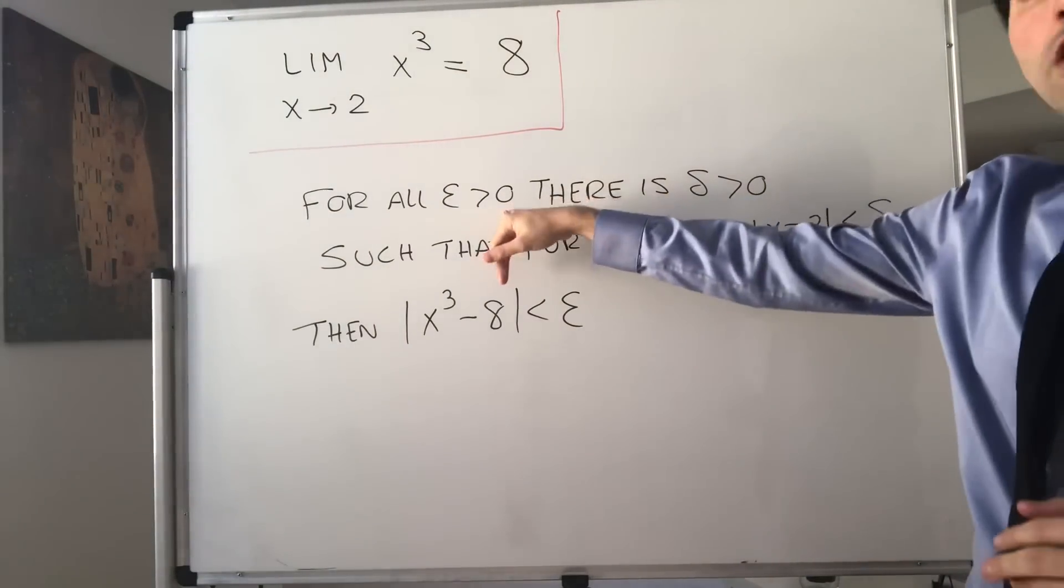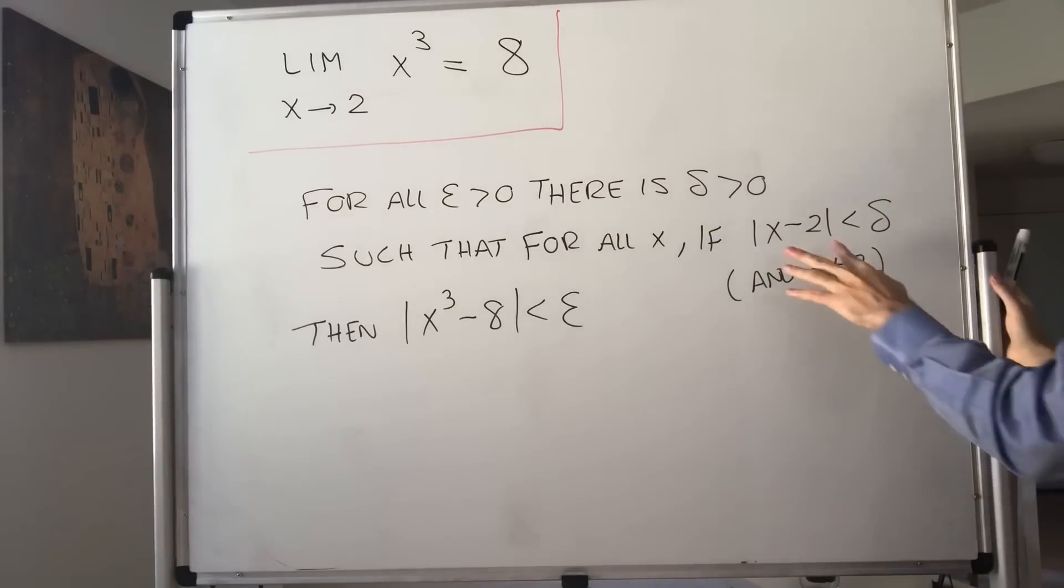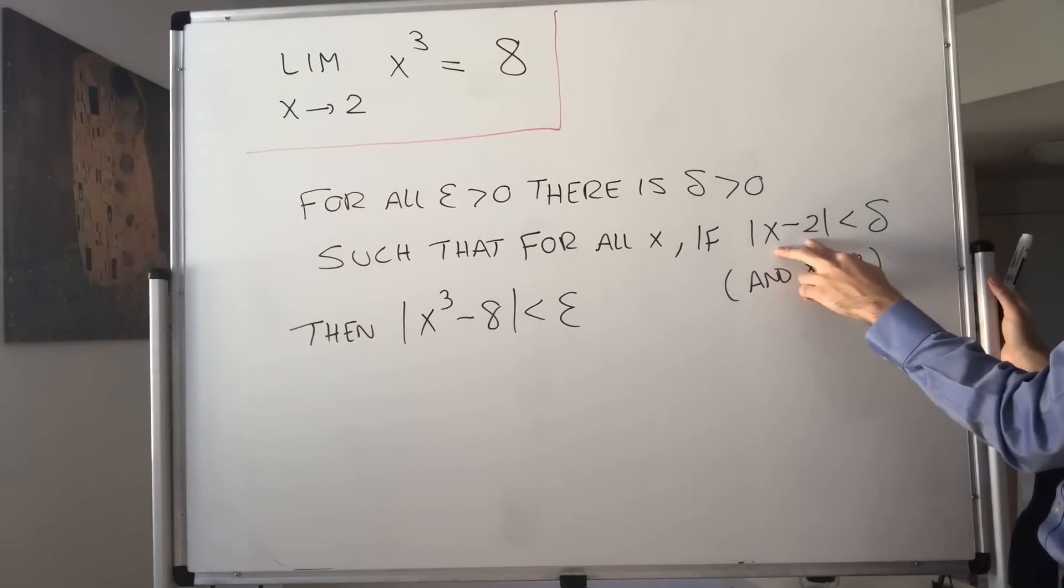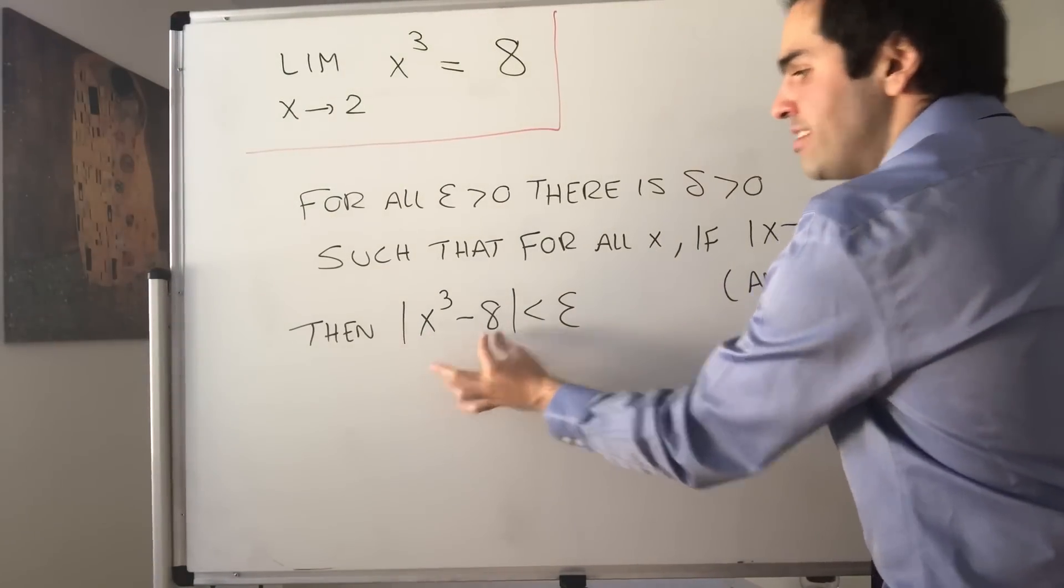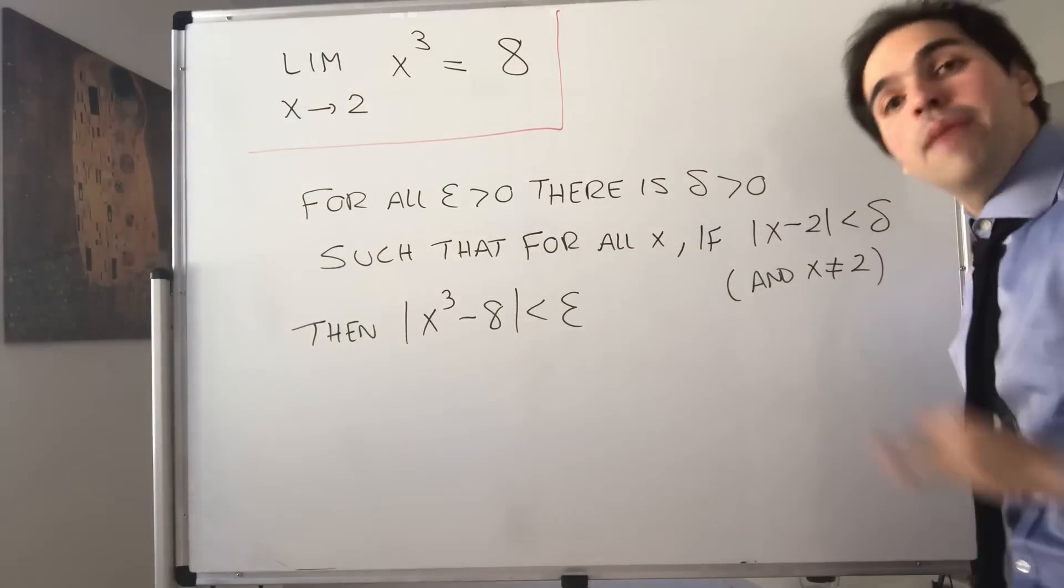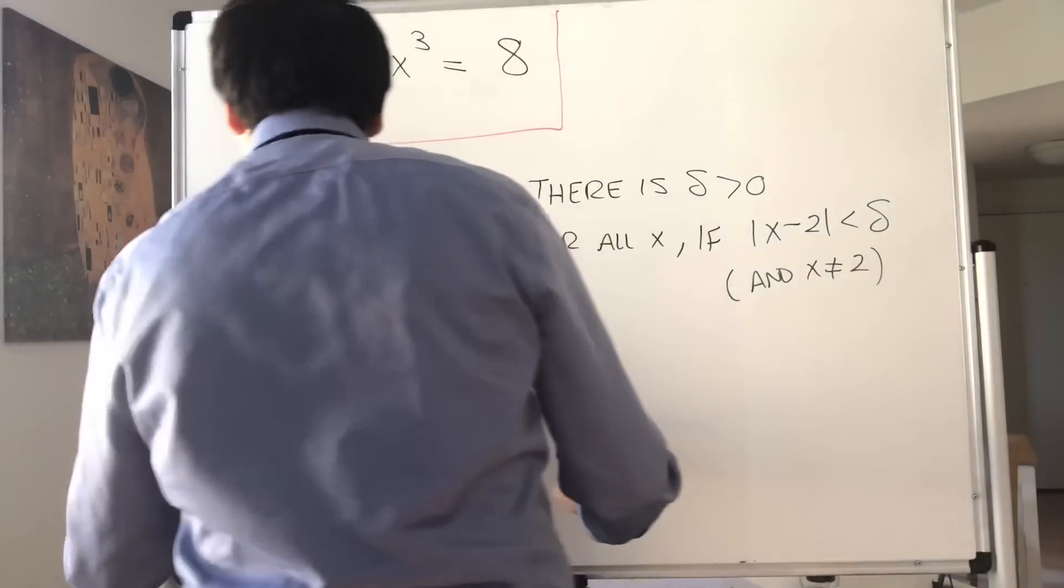Again, no matter how small the error, you can find some threshold such that if x is close enough to 2 within that threshold, then x cubed is as close to 8 as we want, because epsilon can be as small as we want. There are two steps here.